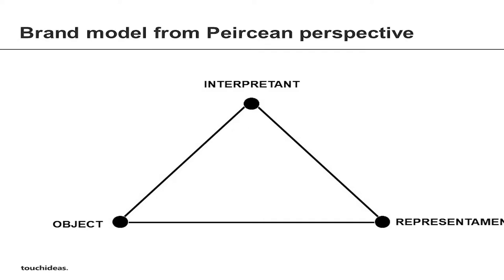I treat the Peircean perspective, or Peircean sign, as a brand model. But the problematic thing is that it's actually the finale of the process of brand building. It's very useful for brand managers to understand their brand, to evaluate it and audit it. But as someone working on brand building, it doesn't explain the whole process of getting there, so I needed to take a step back and understand how to actually get there.